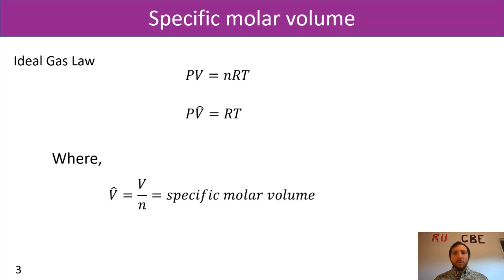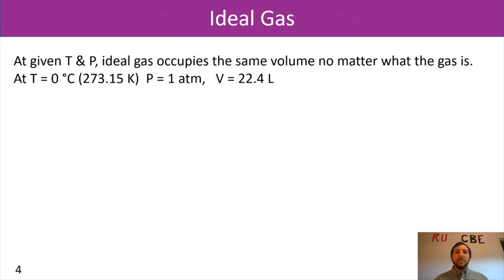For our ideal gas, I think it's good for us just to remember, what are these ideal gases? An ideal gas is, at a given T and P, ideal gases occupy the same volume, no matter what the gas is. So at T equals zero degrees Celsius, the pressure is one ATM, and our volume would be 22.4 liters. Also remember for our ideal gas, that's when you're operating at a very low pressure and a high temperature. And when that happens, we get to make a couple of assumptions, which I'm going to mention when we get to those equations of state.